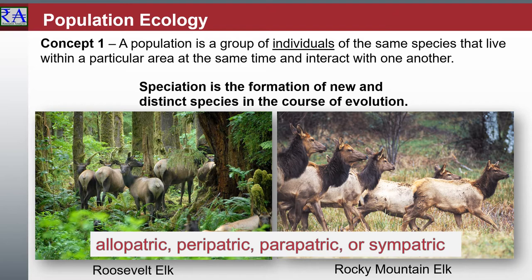Speciation occurs when biological populations of the same species become isolated from each other to an extent that prevents or interferes with gene flow. The separated populations develop adaptive responses to their restrictive environments. We look for examples to prove it.